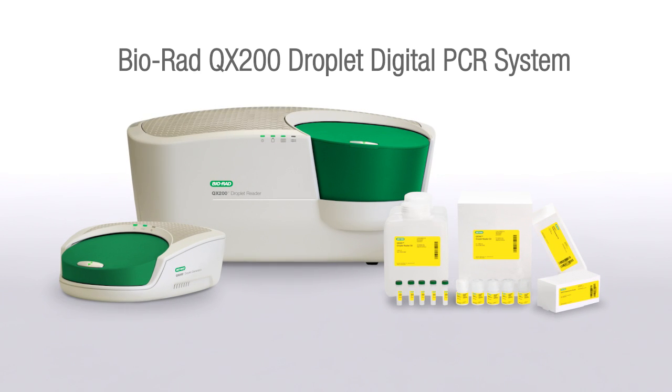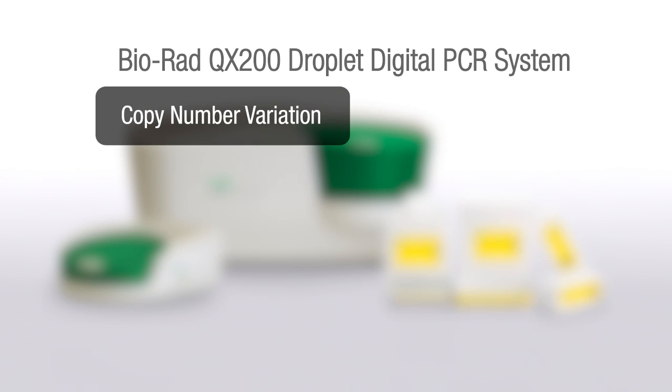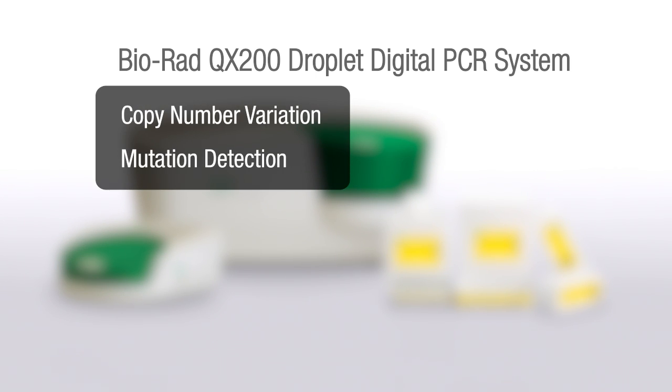Droplet digital PCR simplifies the process of identifying and testing a potential drug target by enabling the absolute quantification of target DNA, allowing for precise gene expression measurements and tracking of genomic sequences in liquid biopsies along with many more applications. Examples of these applications include copy number variation, mutation detection, and gene expression.